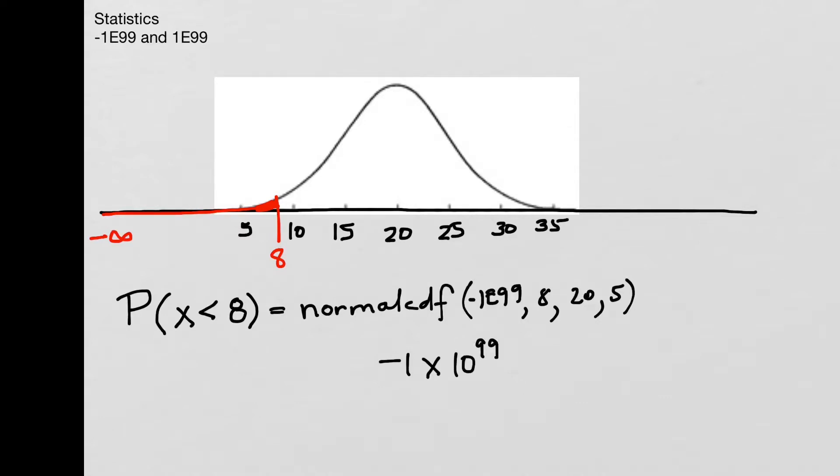So 1 times 10 to the 99th power would be a very, very, very large number, and so by making it negative we're going very far to the left. So it's not actually negative infinity, but it might as well be for our purposes because it's so far to the left that it is not going to make a difference in our answer.